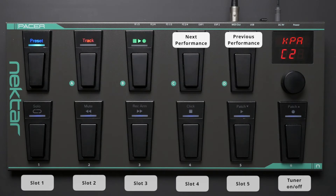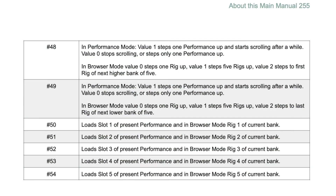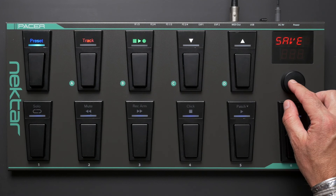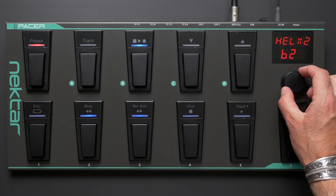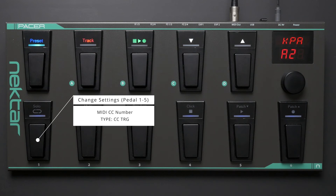Let's start with the settings for foot switches 1 to 5. We'll have to look up the MIDI CC assignments in the manual to see which commands are needed for slot selection — we'll need switching commands number 50 to 54. I'll use a copy of Pacer's Kemper preset as a starting point. Two settings have to be changed for each switch: the MIDI control change number, and also the switching command type. Currently toggle is selected — that's an on-off function — but for slot switching I'll require a one-time switching command. This switching type is called a CC trigger, or CC-TRG.